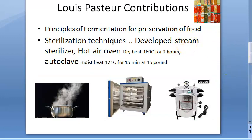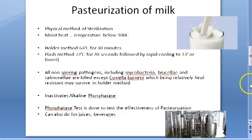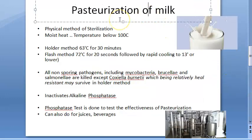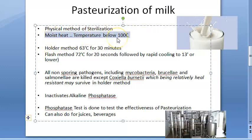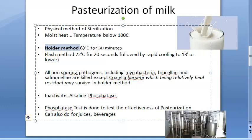Next, pasteurization of milk — you can explain this in full. It is a physical method of sterilization using moist heat at a temperature below 100 degrees centigrade. There are two methods: the holder method and the flash method. The holder method is weaker; the flash method is really good.